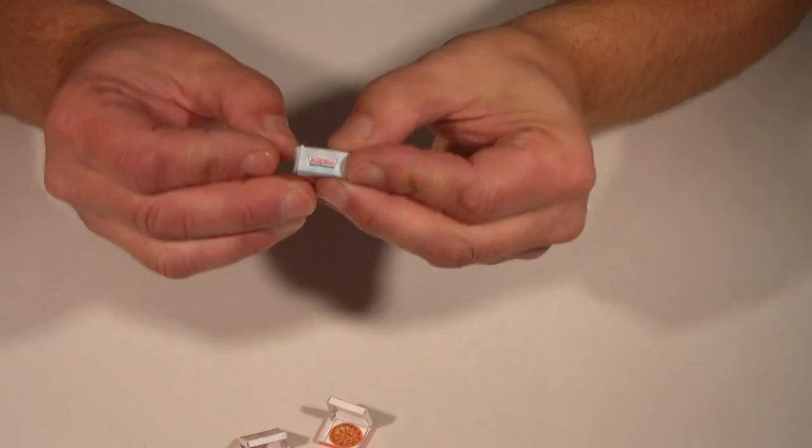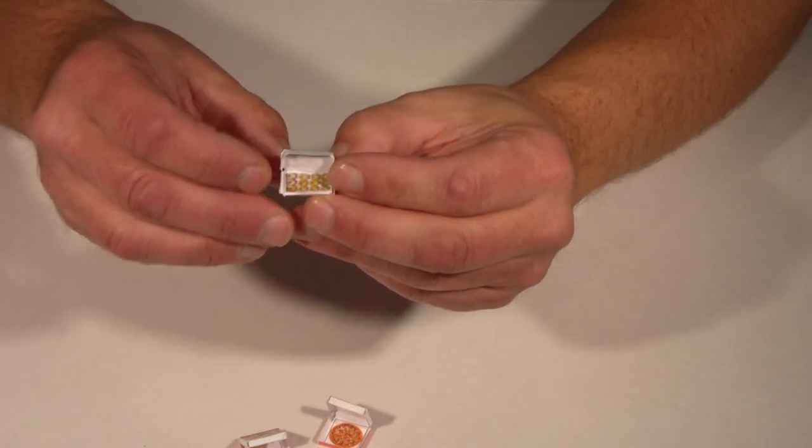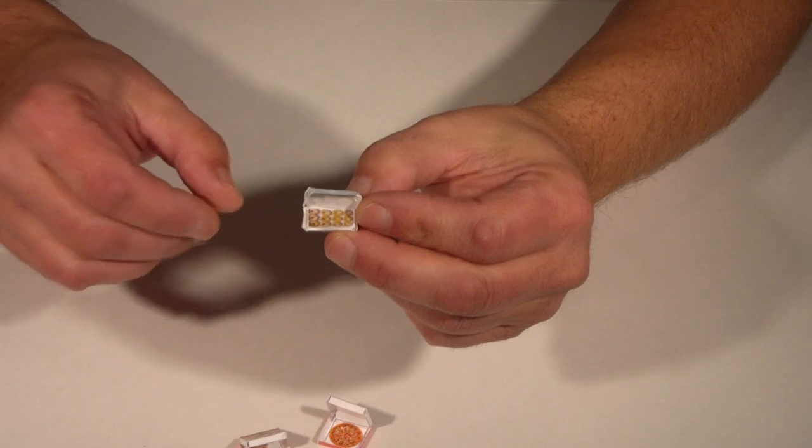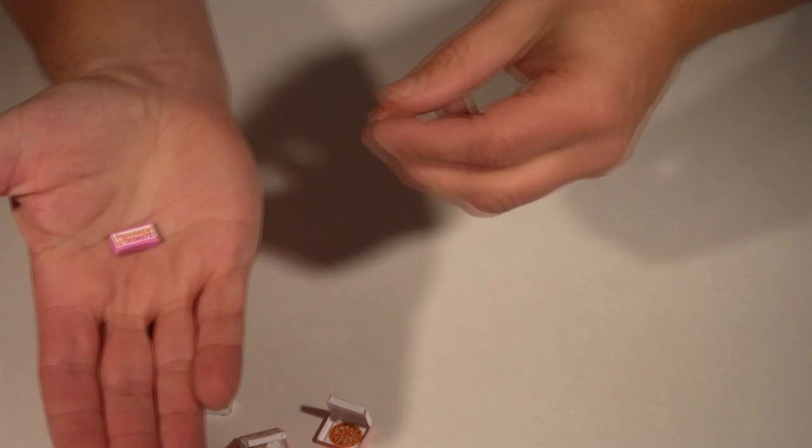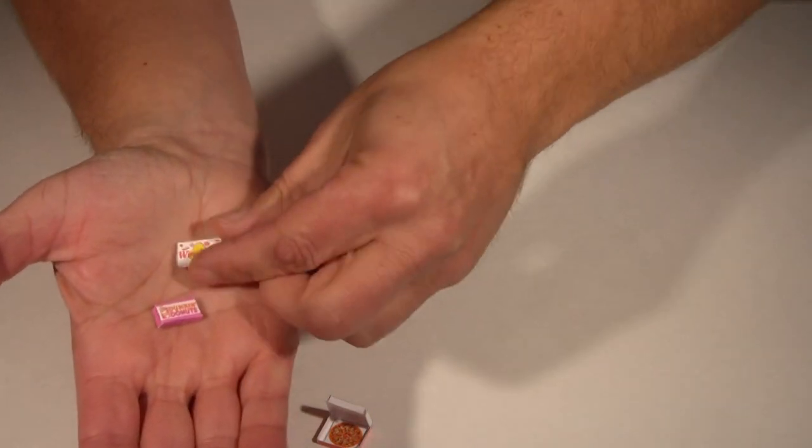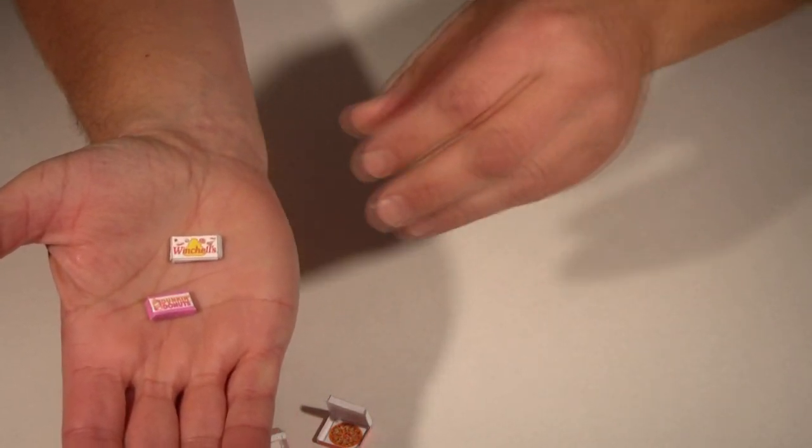Here's a box of Krispy Kreme doughnuts. See there's doughnuts actually inside the box. Here's a box of Dunkin' Donuts. Here's a box for Winchell's.